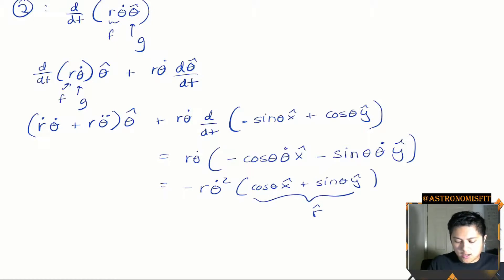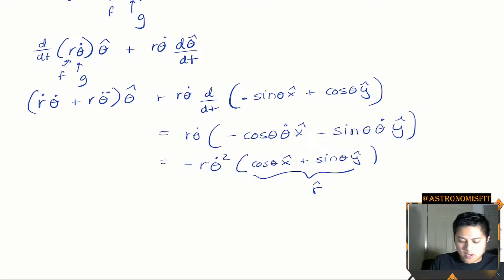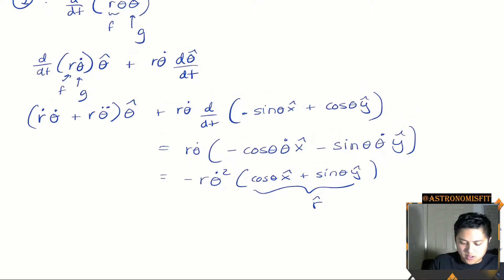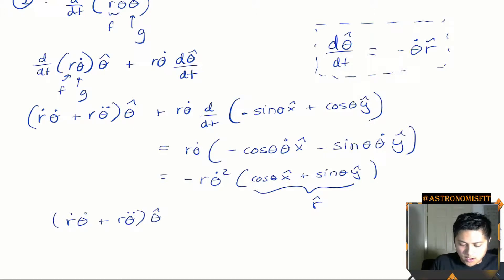Factoring out negative theta-dot, we recognize the remaining expression cosine(θ) x-hat plus sine(θ) y-hat is just r-hat. So d(theta-hat)/dt equals negative theta-dot times r-hat — it's very interesting to see how the derivatives of the unit vectors correspond to each other. Combining everything in term two, we have (r-dot times theta-dot plus r times theta-double-dot) in the theta-hat direction, plus negative r times theta-dot-squared in the r-hat direction.